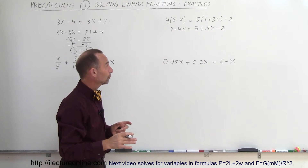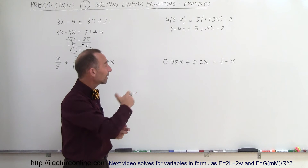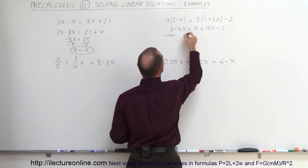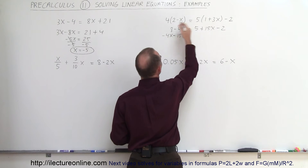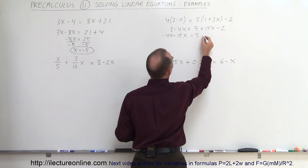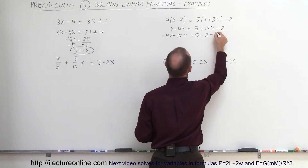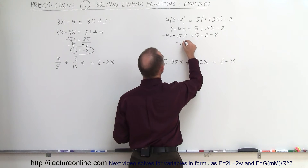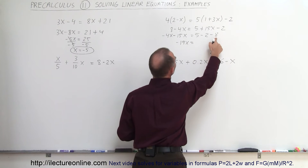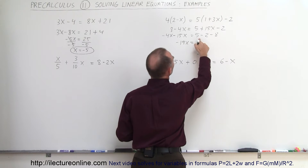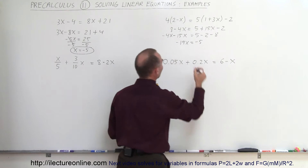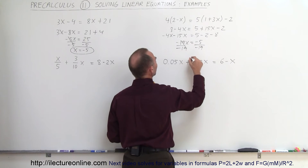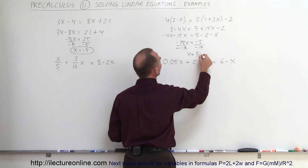Now we move all the terms with x to the left side of the equation, everything else to the right. So we have minus 4x minus 15x — because that becomes minus when we move it across the equal sign — equals 5 minus 2, and the 8 goes across and becomes a minus 8. We combine like terms and get minus 19x is equal to minus 5. Finally we divide both sides by the numerical coefficient in front of the x — that cancels out — and x equals 5 over 19.